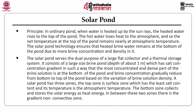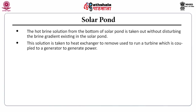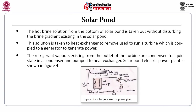A solar pond has three zones: the top surface zone with least salt content at atmospheric temperature; the bottom zone that collects and stores solar energy as heat; and the gradient non-convective zone in between. Hot brine from the bottom is taken to a heat exchanger and used to run a turbine coupled to a generator to produce power. Refrigerant vapors from the turbine outlet condense in a condenser and are pumped back to the heat exchanger.